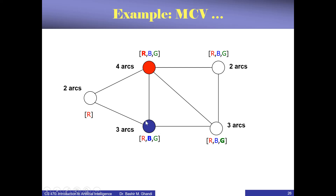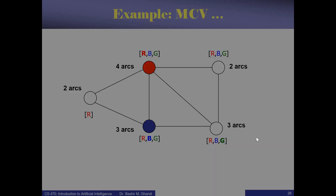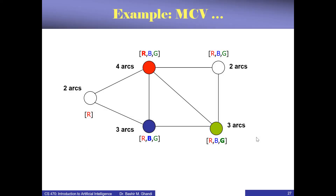Obviously it cannot be red for its neighbor, so suppose we make it blue. The next one in terms of degree has three arcs, so it has to be green. Then we look at those with two arcs. If we choose one it can take blue. But then if we attempt to try the last node, we reach a dead end because it can only take red, and red has already been taken. So we have to backtrack.